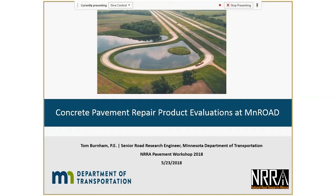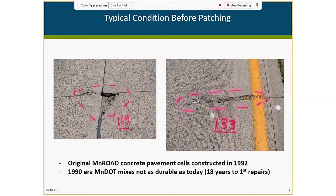Tom then presented on concrete pavement product evaluations done at the MnROAD facility. MnROAD sections were built back in the early 1990s, which was somewhat of a dark period for performance — higher water-cement ratios, not as good aggregate systems. Those sections experienced very similar conditions to the rest of the network, starting to show surface deterioration at about 18 years.